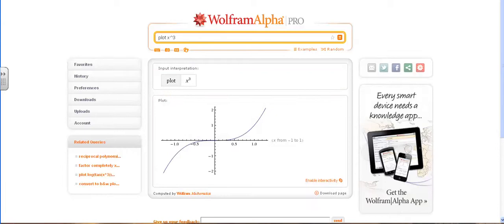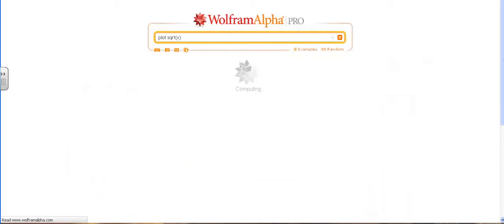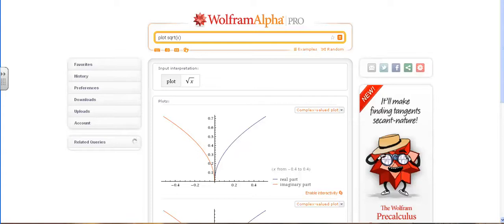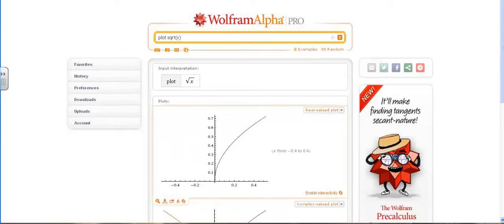How about the square root function? To plot that, type in sqrt short for square root of x. For this plot, Wolfram Alpha returns both the real part and the imaginary part. To see only the real part, change this selection to real value plot. And Wolfram Alpha returns the plot with only the real values.